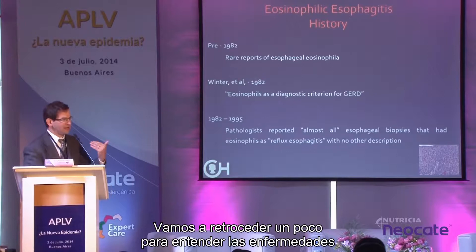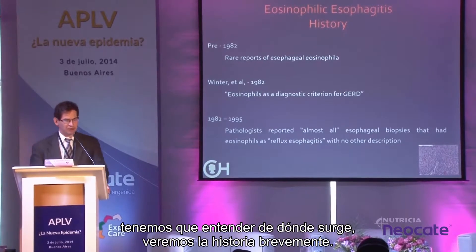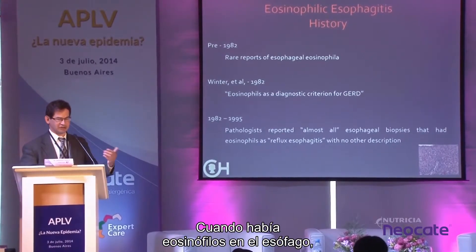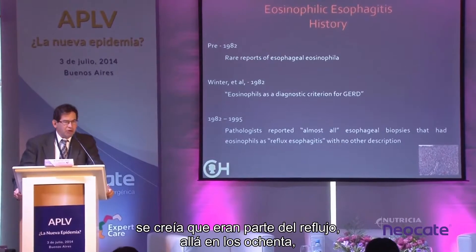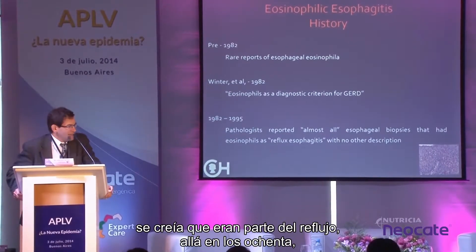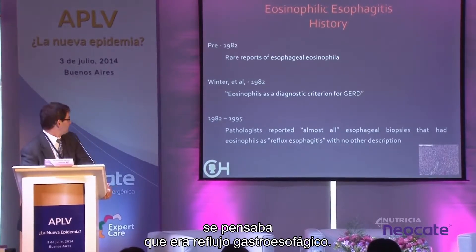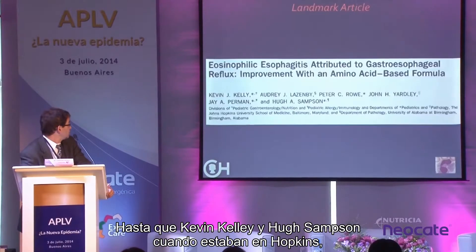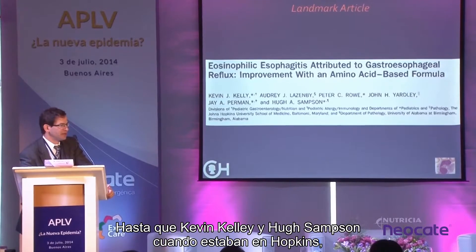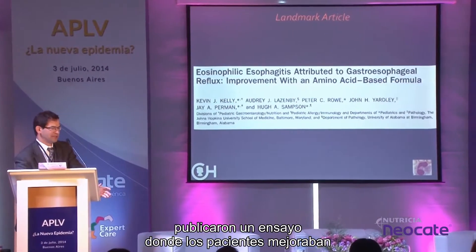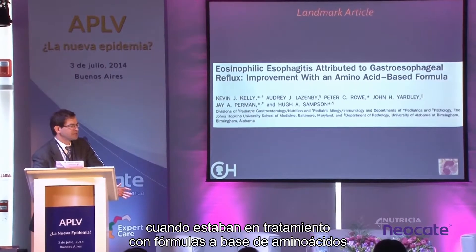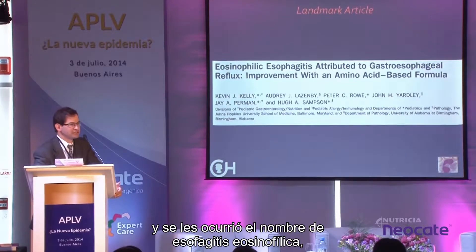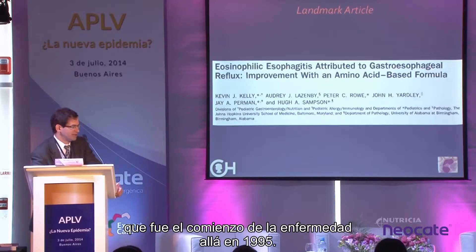To understand the disease, it's good to understand the history. Eosinophils in the esophagus were originally thought to be part of reflux back in the early 1980s through the 1990s. Then Kevin Kelly and Hugh Sampson, when they were at Hopkins, published a paper showing patients got better on amino acid formula. They said maybe this is not reflux — maybe this is a food allergy — and coined the name eosinophilic esophagitis. This was really the start of the disease back in 1995.